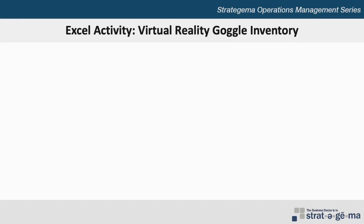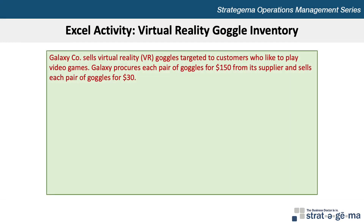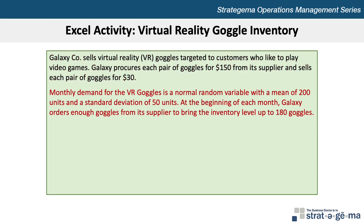Here's the data for our problem. Galaxy Company sells virtual reality or VR goggles targeted to customers who like to play video games. Galaxy procures each pair of goggles for $150 from its supplier and sells each pair for $30. Monthly demand for the VR goggles is a normal random variable with a mean of 200 units and a standard deviation of 50 units.